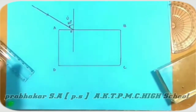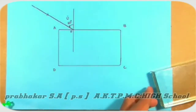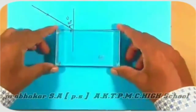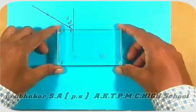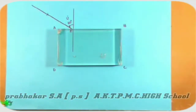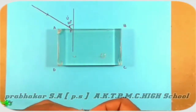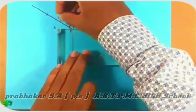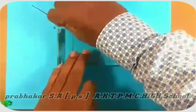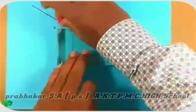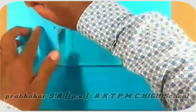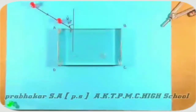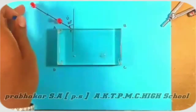Now, place the rectangular glass slab back on the paper. Now, take two pins and put them on the incident ray that we drew. Those are the two pins.